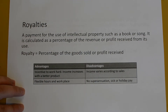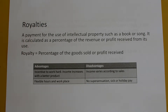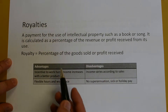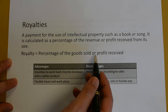Royalties are a payment for the use of intellectual property, such as a book or song. For example, if a musician creates a song and somebody wants to use it, he could charge them a royalty, which is usually a percentage of the revenue or profit received from its use. Another example would be a book author — if they write a book, publish it, and sell it, for every copy sold they would earn a small percentage of the profit. Royalty is calculated as a percentage of goods sold or profit received — that percentage multiplied by the profit.